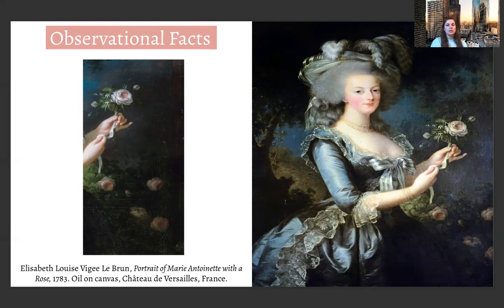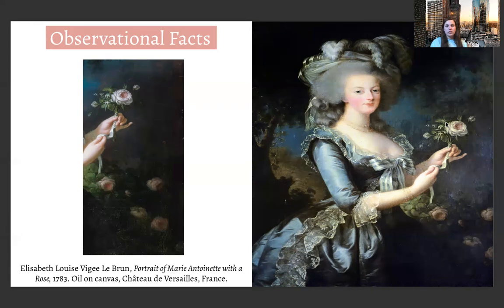The cabbage rose that Marie is holding was a signature flower for her. In the portrait it's at the peak of its bloom, which can represent how Marie viewed herself as Queen of France — after all, she was married to Louis XVI at the age of 14, which was considered the prime time for marriage and family, hence the term 'peak of its bloom.' The rose also represents her Christian faith as well as a nod to her Austrian heritage.